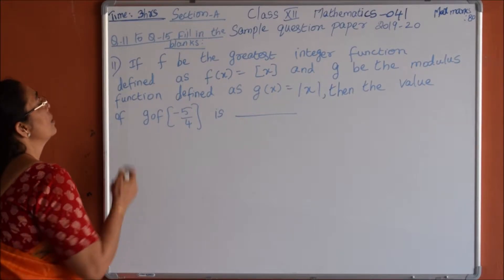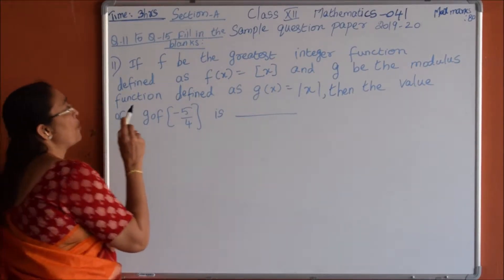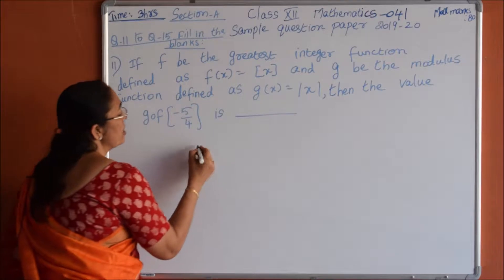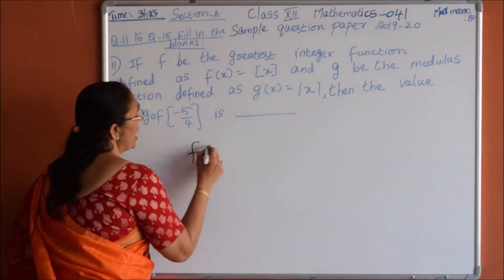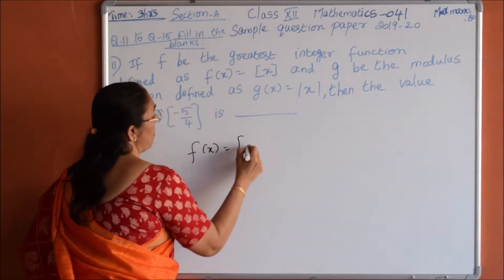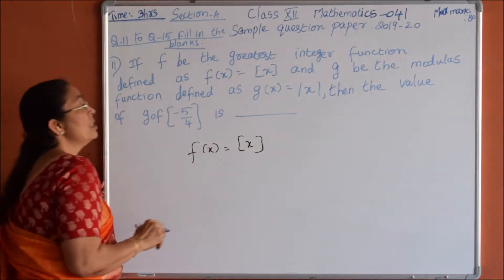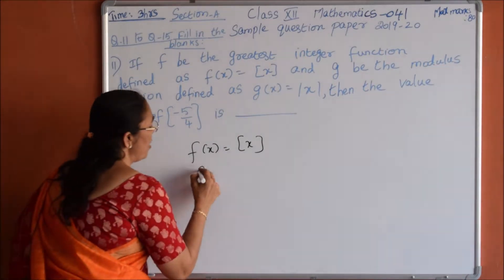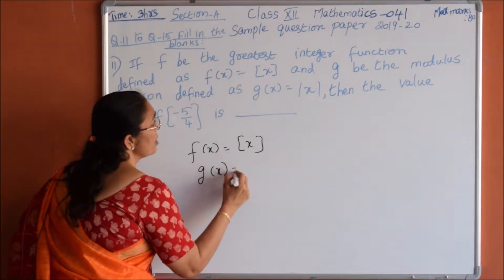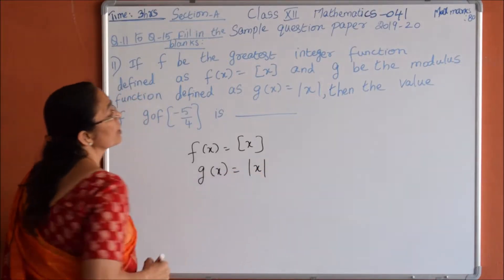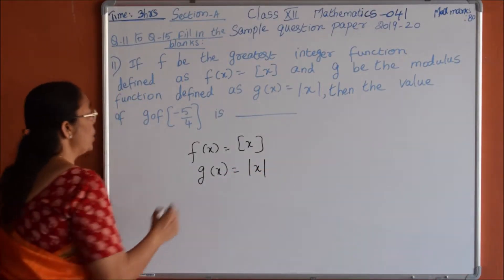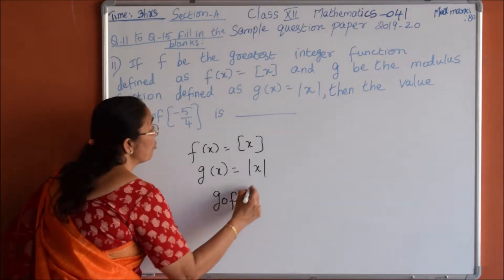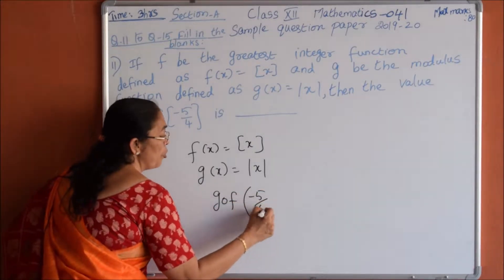Question 11: Let f be the greatest integer function defined as f(x) = step(x), and g be the modulus function defined as g(x) = |x|. Find the value of g composition f of minus 5 by 4.